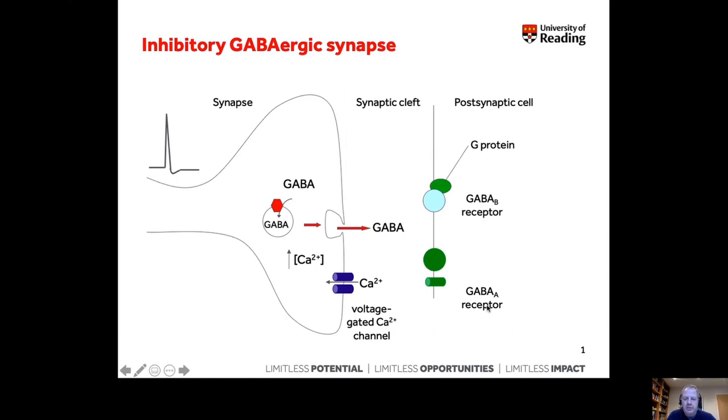GABA-A receptors have an ion channel. GABA-B receptors are G protein-coupled receptors, which you'll find out about in other parts of the course.